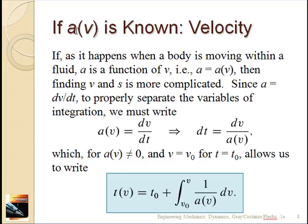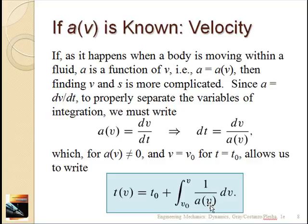If we're given acceleration as a function of velocity only — a = a(v) — and since a = dv/dt, we write dt = dv / a(v). We've separated variables again: everything is a function of velocity on one side and time on the other. Integrating both sides with v = v₀ at t = t₀, we get t(v) = t₀ + integral from v₀ to v of dv / a(v). If we're lucky, we can invert this to get velocity as a function of time.